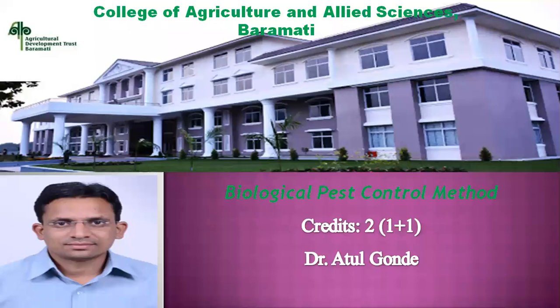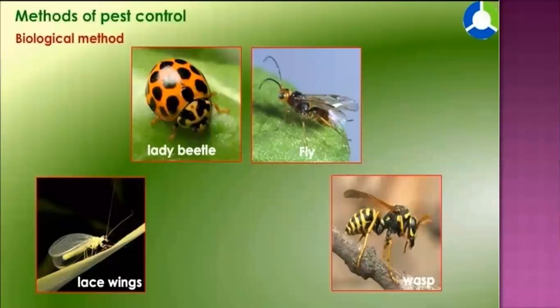Today we have to discuss a new topic: the biological pest control method. It is a new and very important pest control method that generally uses different natural enemies or biological control agents. Here I am showing pictures of a ladybird beetle, a chalcid wasp, a green lacewing, and a wasp. These are all natural enemies that occur in the environment, and their role is to minimize pest populations naturally without interference of man.